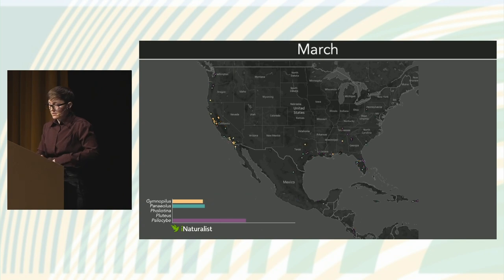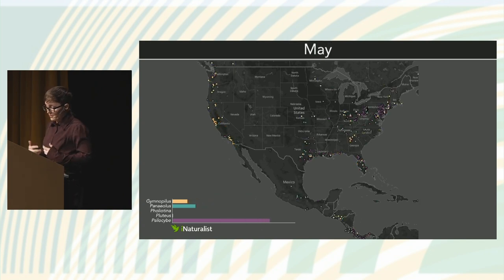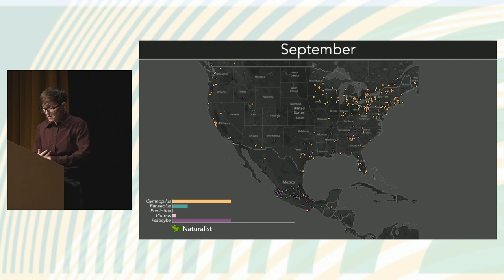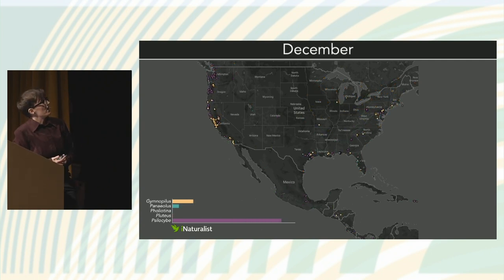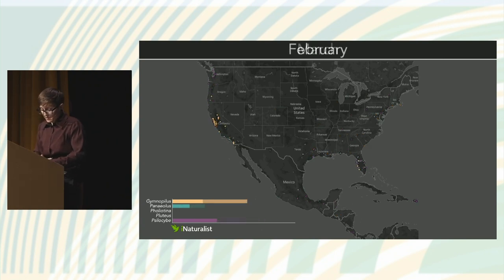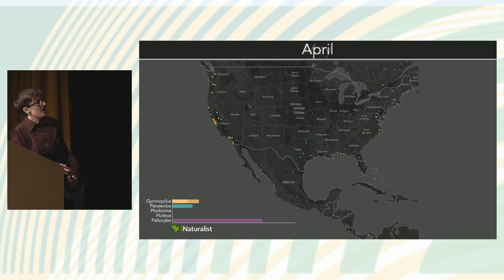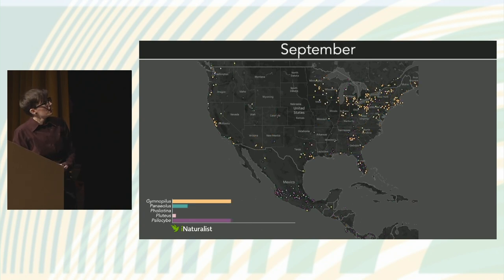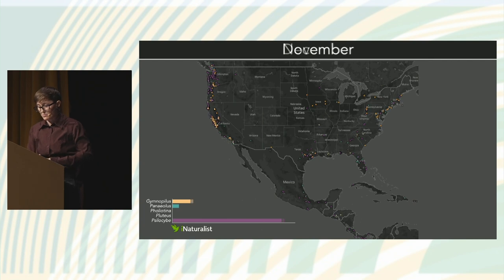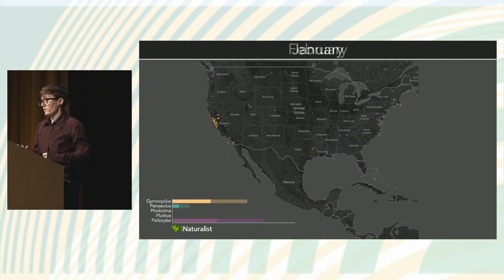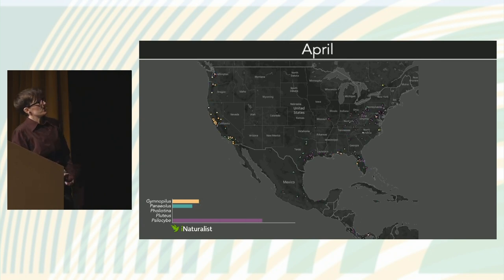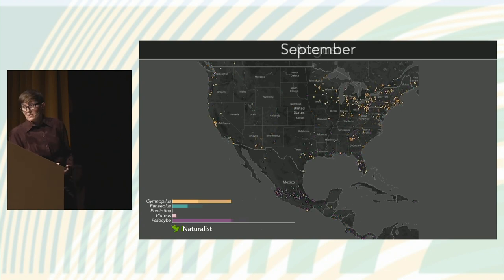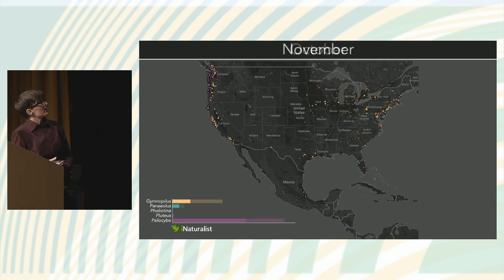The takeaway message is that psilocybin-producing fungi have different spatiotemporal patterns of fruiting depending on the taxa. Generally speaking, most mushrooms favor mild temperatures and rainfall. The screen is cycling through the major genera that have psilocybin-producing species, and each bar represents the accumulation of iNaturalist observations — showing that where rainfall is good and temperature is mild, we see increasing abundance. We see the greatest number of observations in Mexico in the summer due to subtropical storms, and then in the Pacific Northwest in the fall and winter months.